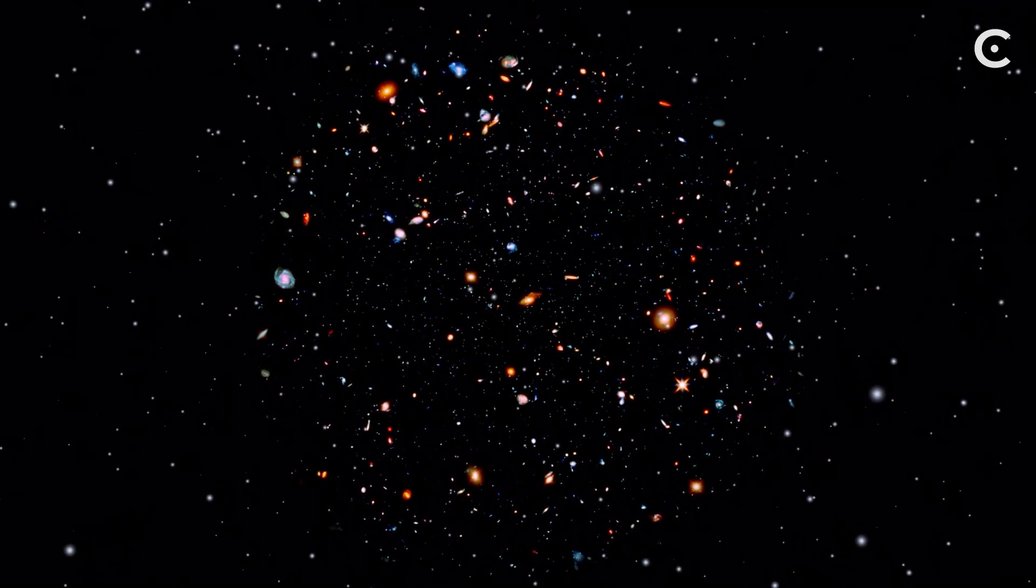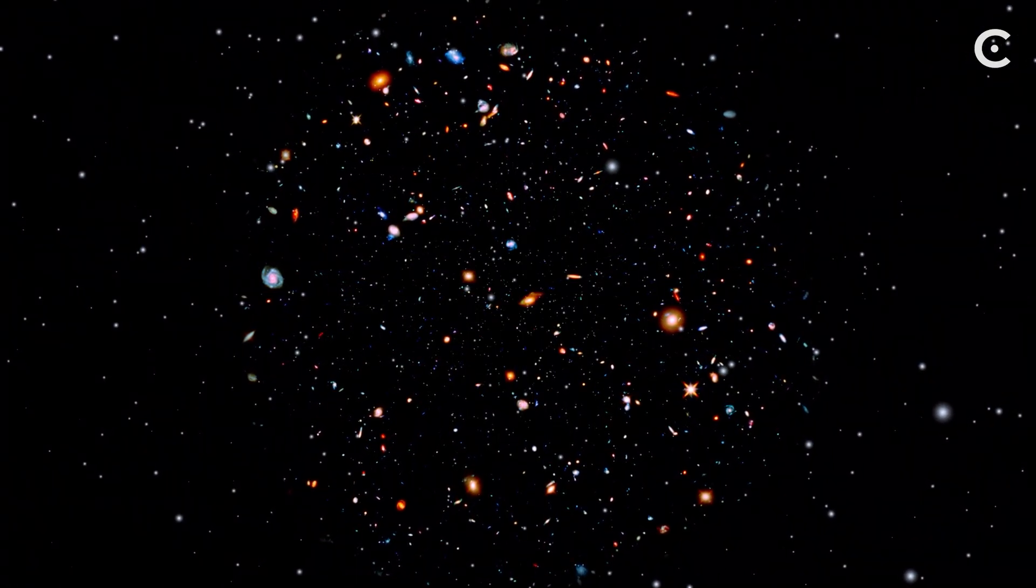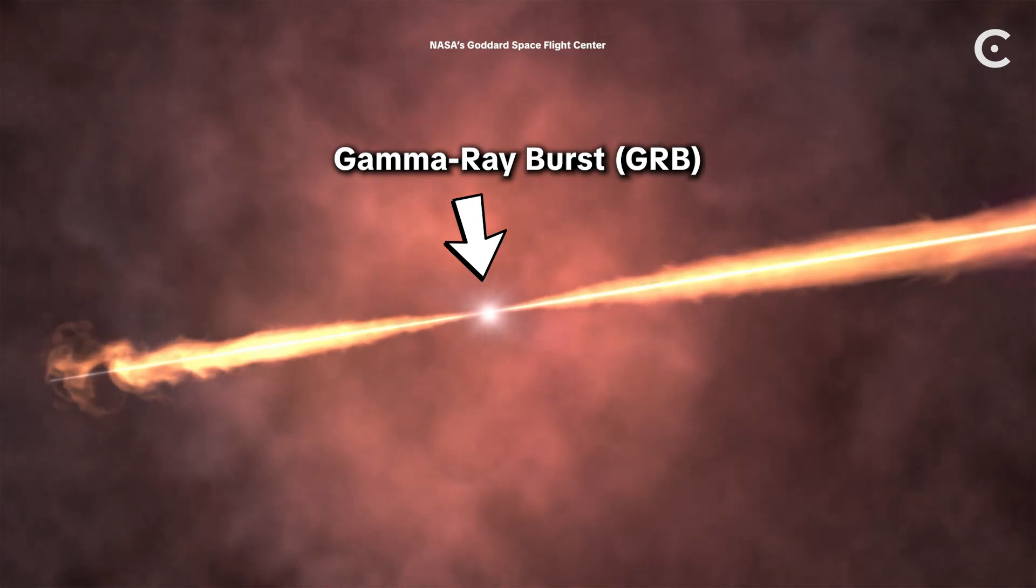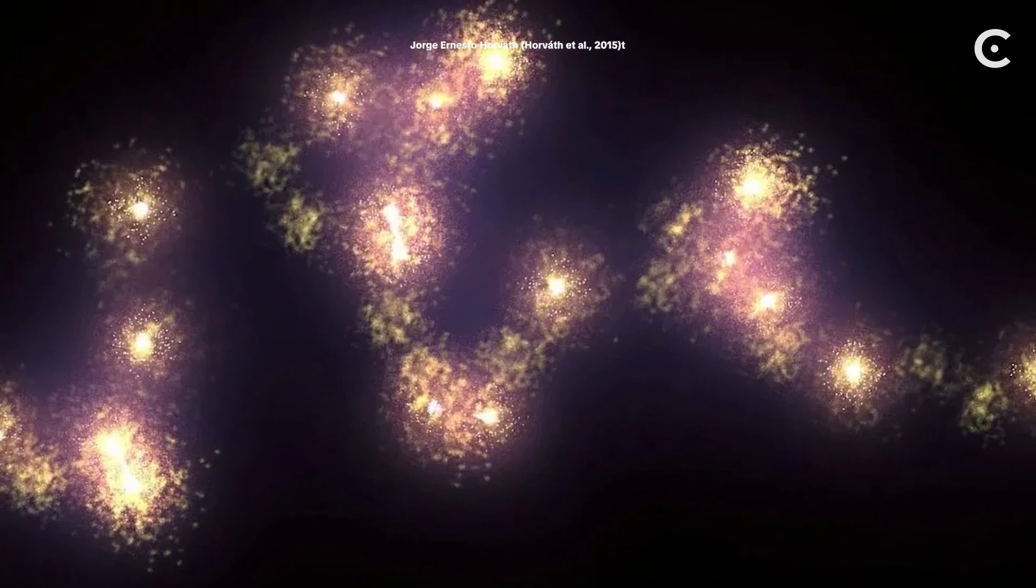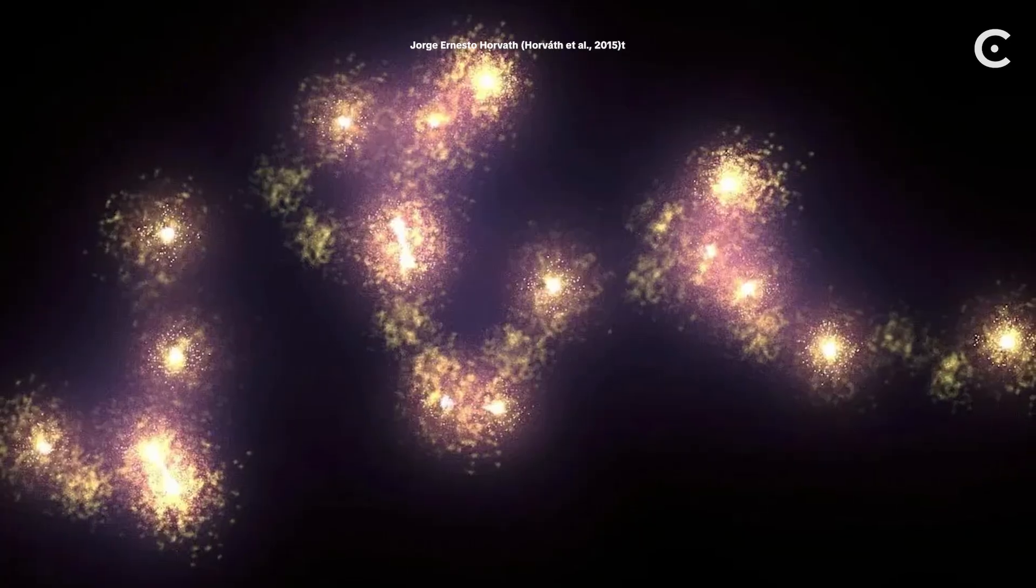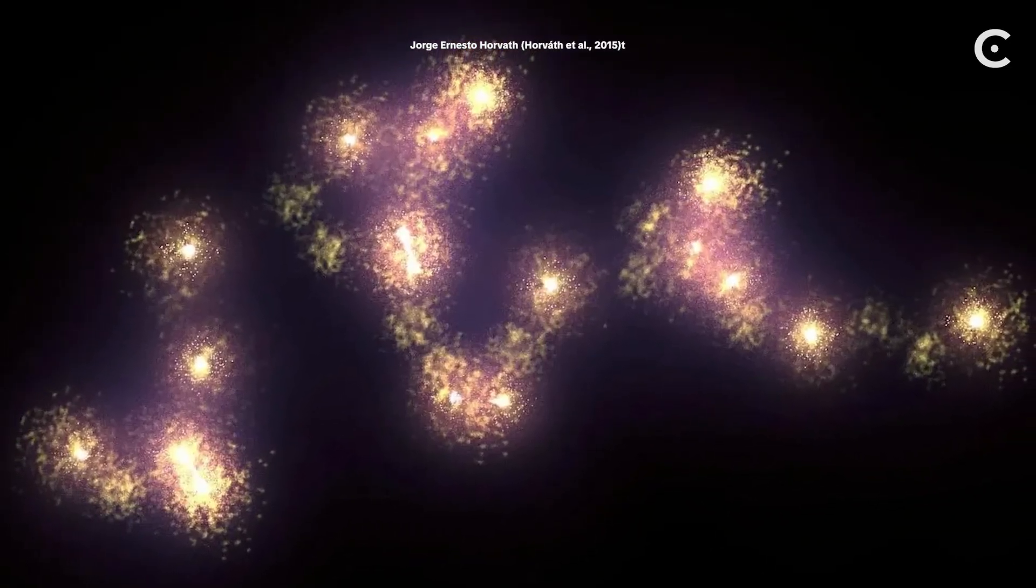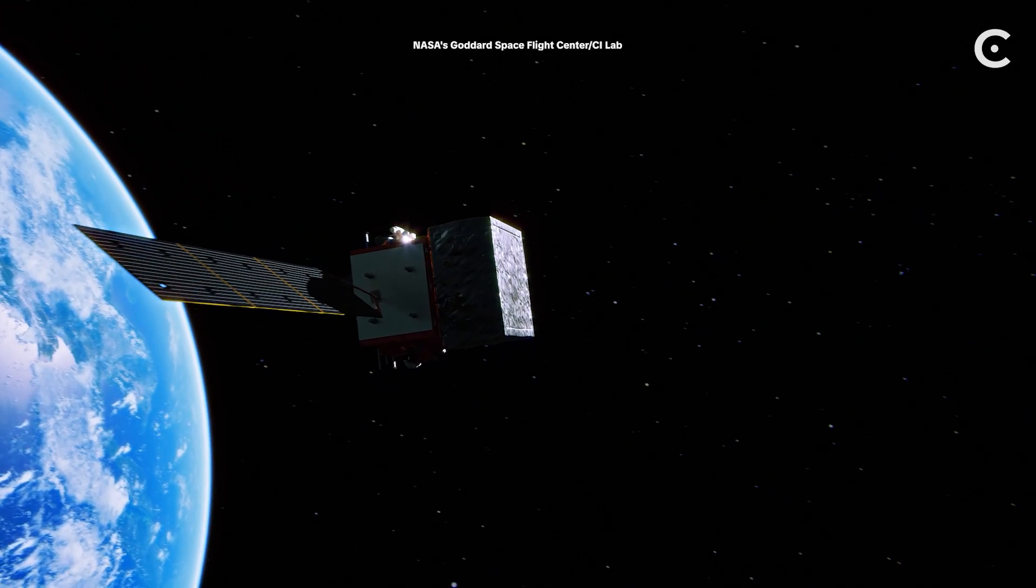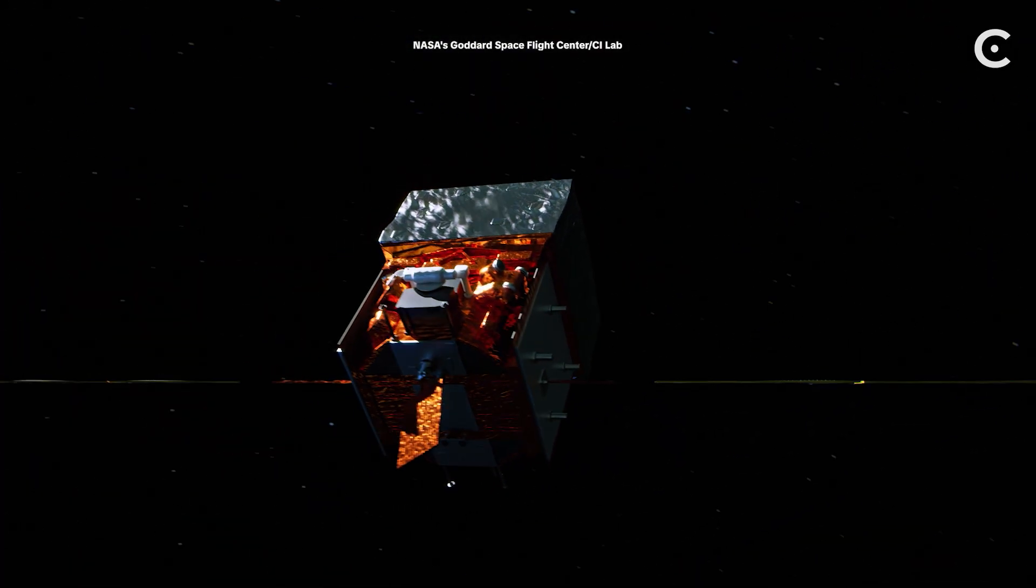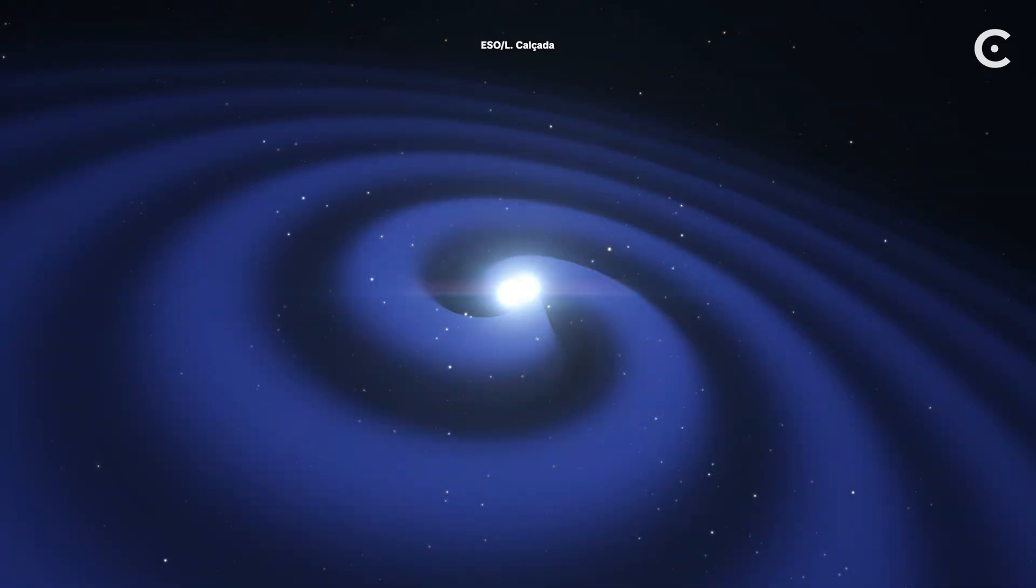Here's why. Unlike the other structures, which we can map using visible galaxies or X-ray clusters, the Hercules-Corona Borealis Great Wall was detected using gamma-ray bursts, GRBs, the most violent explosions in the universe. In 2013, astronomers noticed that GRBs at a certain distance seemed to cluster together in one region of the sky way more than random chance would predict. They calculated the odds and suggested there might be some enormous underlying structure causing this pattern. But here's the catch. GRBs are rare. We don't have that many data points.